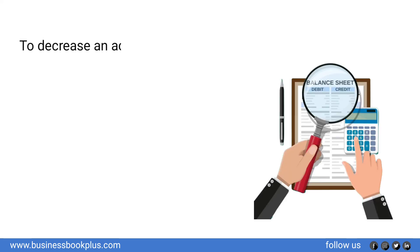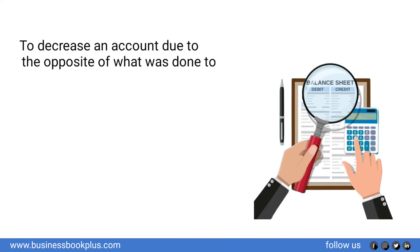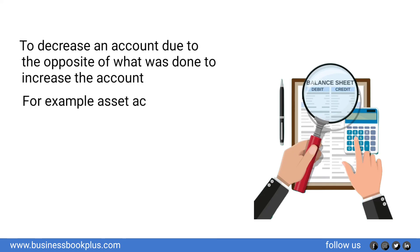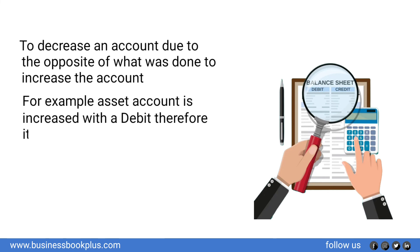To decrease an account, do the opposite of what was done to increase the account. For example, an asset account is increased with a debit; therefore it is decreased with a credit.